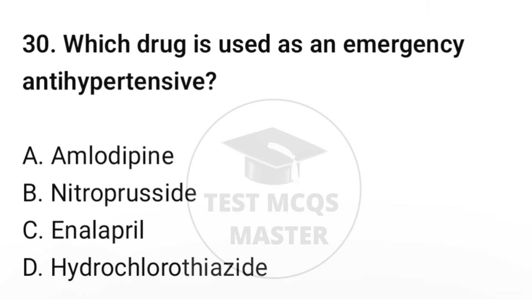Question number thirty: which drug is used as an emergency antihypertensive? The correct option is B: Sodium nitroprusside.